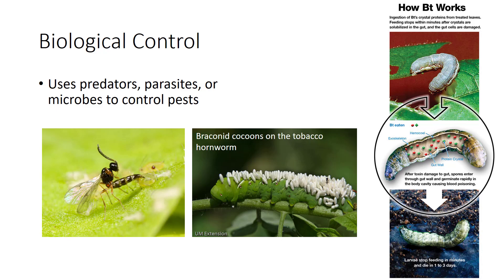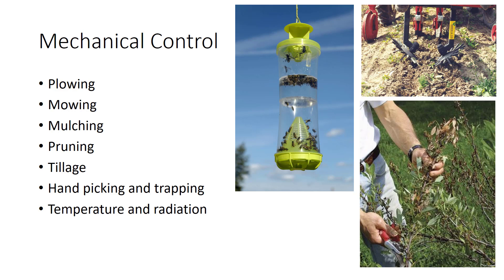Mechanical pest control uses tools, equipment, and other physical means to control pests. Examples include plowing to improve soil structure, mowing to reduce weeds, mulching to prevent weed seeds, pruning to remove disease material, tillage to remove weeds, hand-picking and trapping for insect control, and temperature and radiation to sterilize soil and kill disease organisms.